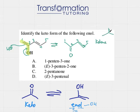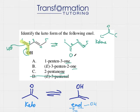A ketone is when I have a double bond O in between two carbons, and an aldehyde would be if I have a double bond O next to a carbon and a hydrogen. Since it's a ketone, the ending should be "-one". One option must be wrong because it's an aldehyde, so that's not it. Next, I can see that my double bond O is on carbon number two, so I can eliminate the option that says "3-one", meaning the double bond O is on carbon three — that's not right.